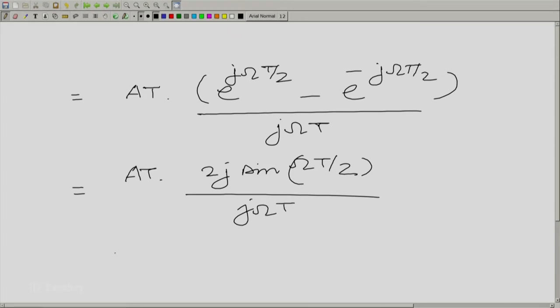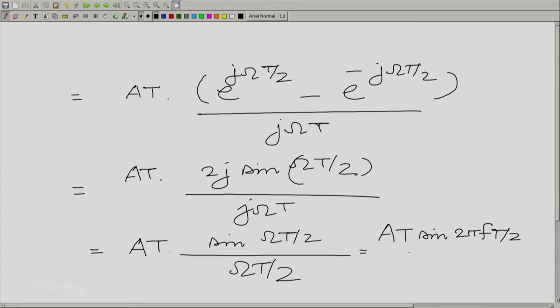You have 2j sin, you know you can look at the numerator. Numerator essentially is 2j times sin omega T by 2 divided by j omega T. And now the 2 can be brought down. So we have aT and the j can go away. aT sin omega T by 2 divided by omega T by 2.